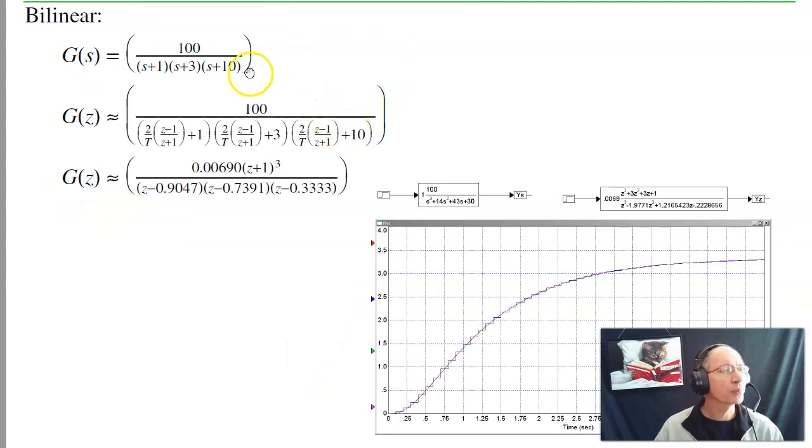The third option was bilinear. Take s and replace it with the trapezoid rule approximation for s. Do some algebra. This takes a little bit of time. Then I wind up with poles at 0.9047, 0.7391, and 0.3333. Again, a little bit different than before.